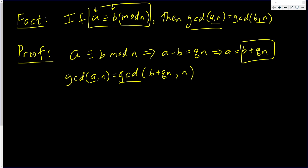Now, I need to show that this is equal to the GCD of B N. The GCD of B N, suppose it equals D. Well, this implies that D divides B and D divides N.